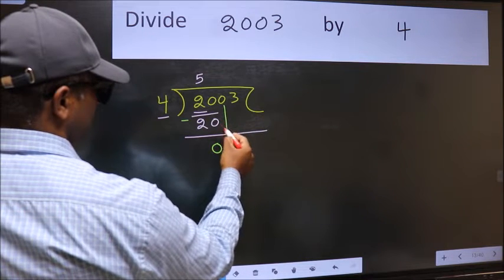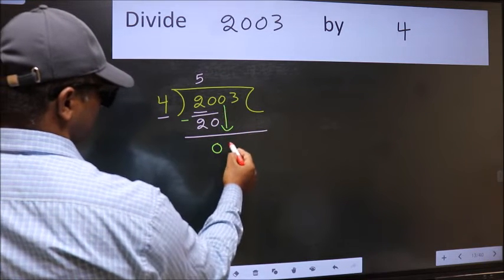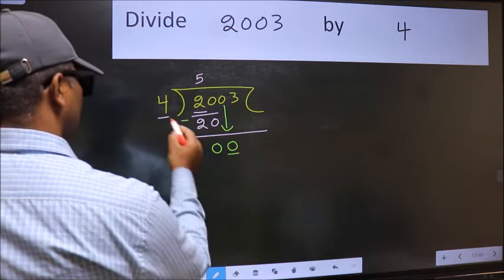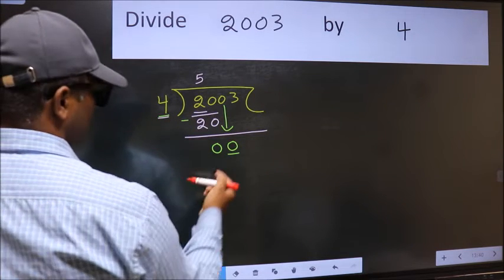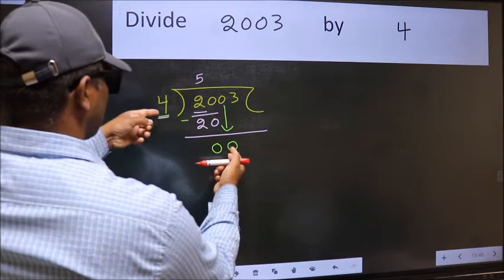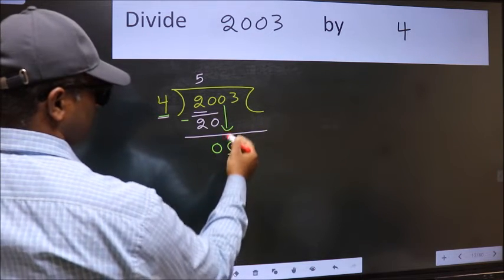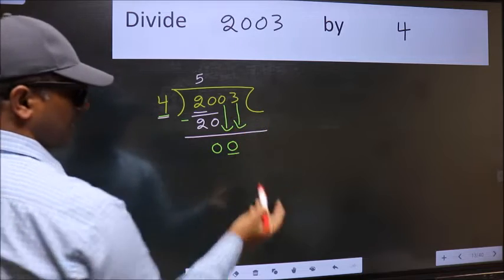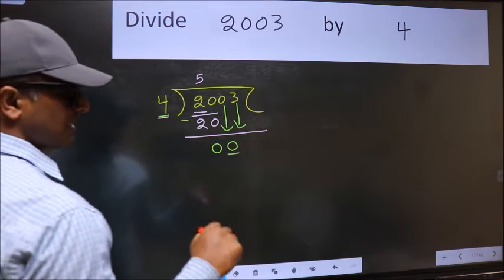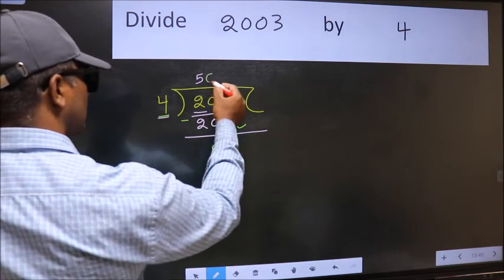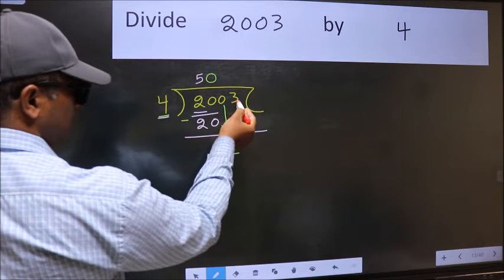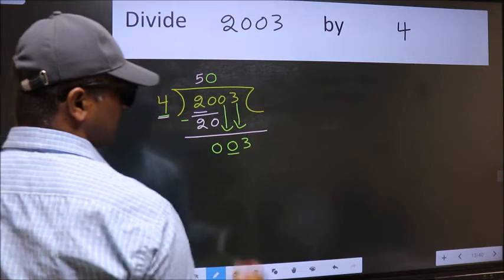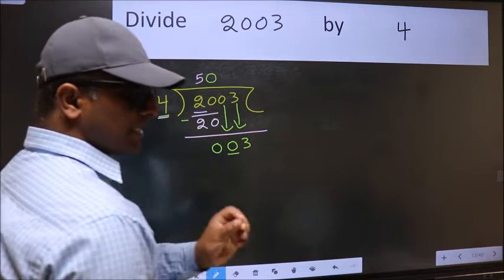After this, bring down the beside number. So, 0 comes down. Now here we have 0 and here 4. 0 is smaller than 4, so we should bring down the second number. The rule to bring down the second number is we should put 0 here — then only we can bring it down. After this step, the mistake happens.